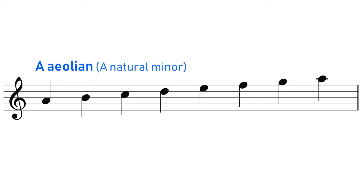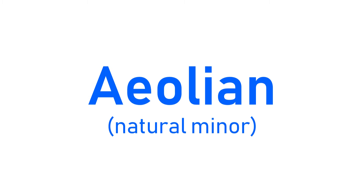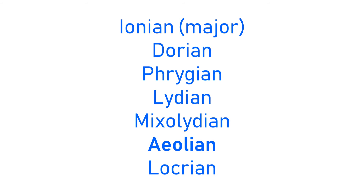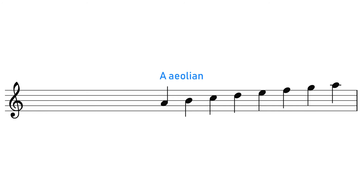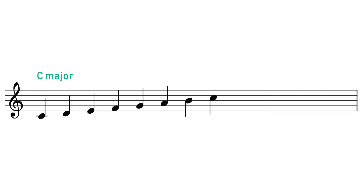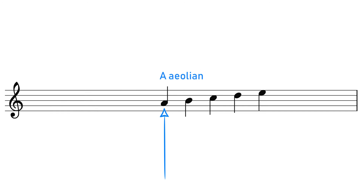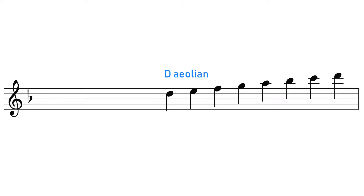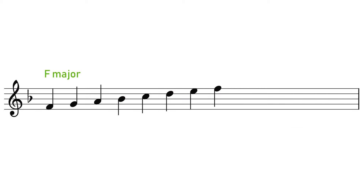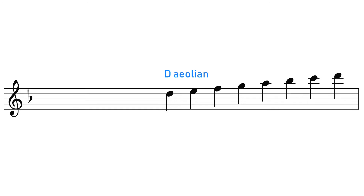Aeolian and the natural minor scale are just two names for the same scale. Aeolian is the modal name because Aeolian is a mode — it's the sixth mode of the major scale. A mode is when a different note of the scale is treated as the tonic note. So for example, if we take the C major scale but treat the sixth degree, A, as the root of our scale, then we're playing in Aeolian — the exact same notes, but with a different centre of gravity. In The Air Tonight by Phil Collins is in D Aeolian, which is the sixth mode of F major, so the song uses all the same notes as F major but resolves to D as the tonic note.